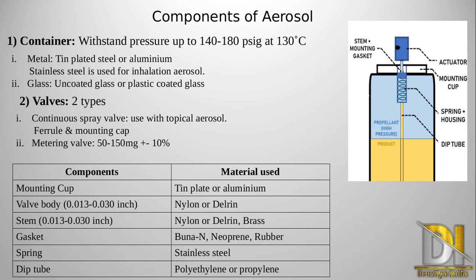Now we will see about the materials used in the components. The mounting cap is generally made up of tin plate or aluminium. The valve body dimensions are generally 0.0132 to 0.030 inch, and it is mainly made up of nylon or Delrin. The stem has the same dimensions as the valve body and is made up of nylon, Delrin, or brass. The gasket is mainly made up of buna-N, neoprene, or rubber, and it provides attachment of the upper part of the aerosol with the remaining container. The spring is mainly made up of stainless steel. The last component is the dip tube, which is made up of polyethylene or polypropylene.